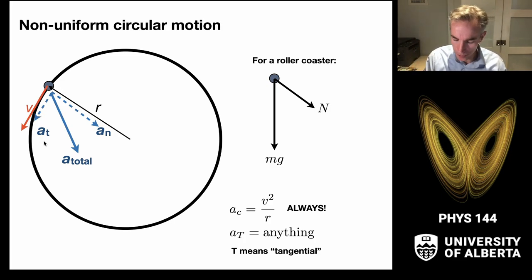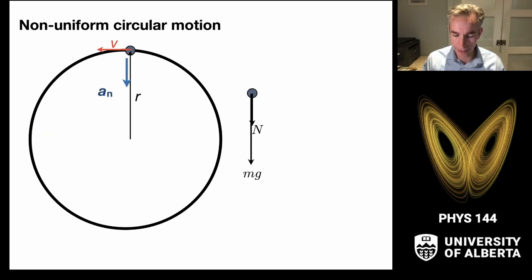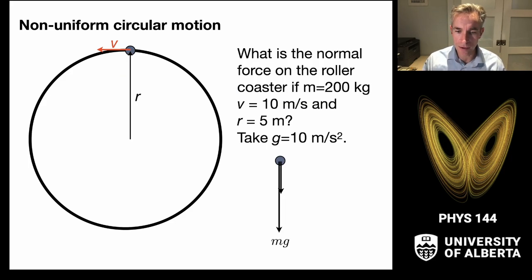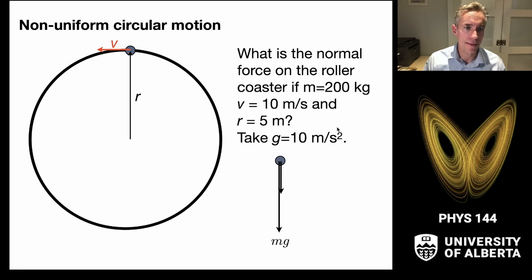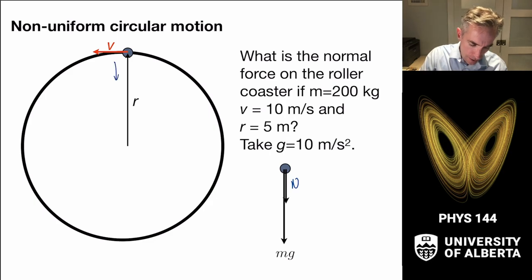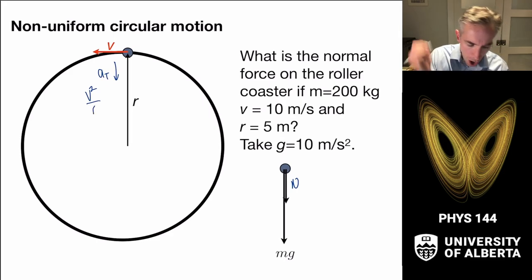I want to consider the loop-de-loop in the context of what's happening at the top — this is the critical point. At the top, there is a normal force from the loop pushing downward, creating an acceleration along with the weight. I want to know what the normal force on the roller coaster is given these properties, with g equal to 10 meters per second squared. In an F equals ma framework, I have a normal force and mg both pointing in the normal direction toward the center.